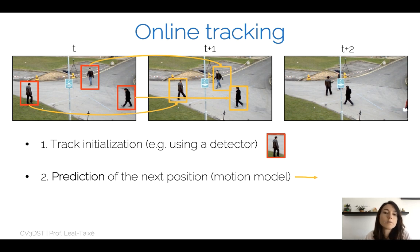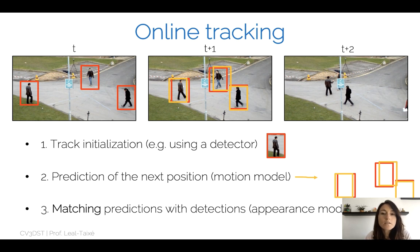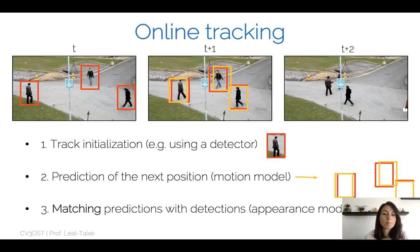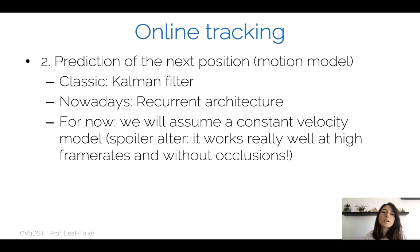Once we have predictions for the next position — the yellow boxes — we also run the detector at frame T plus one. Now we have a set of predictions and a set of detections, and we need to match them. We match the yellow prediction boxes with the red detection boxes, for example using an appearance model, so that whatever appearance is inside the yellow box should match the appearance inside the red box.